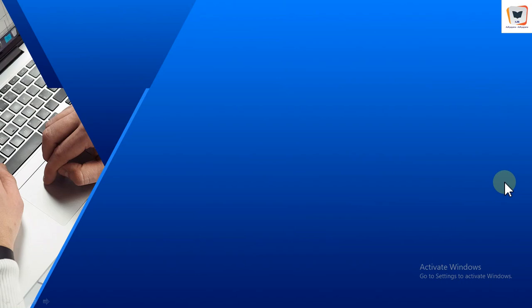As we step into the future, perhaps the most exciting area of AI research is that in which AI brains are grown from biological neural tissue, typically obtained from either a rat or a human. Considerable literature discusses the procedures and methods required to successfully grow a living biological neural tissue. This kind of topic is certainly of interest in its own right as a new form of AI.